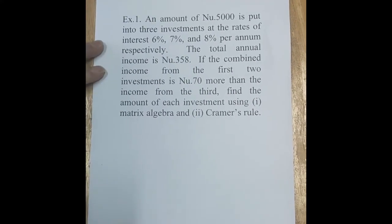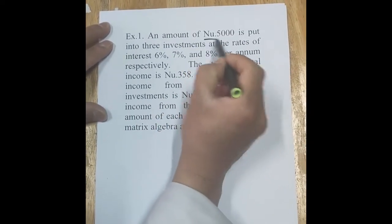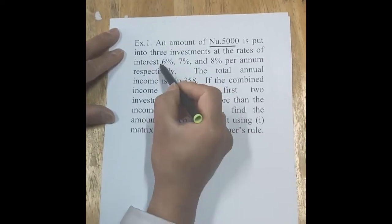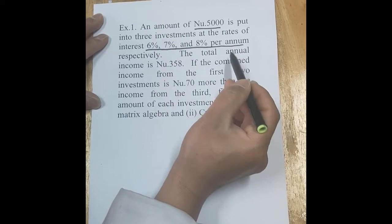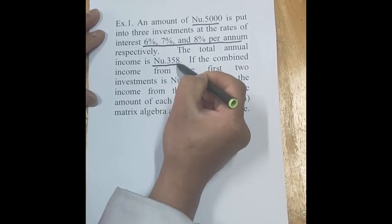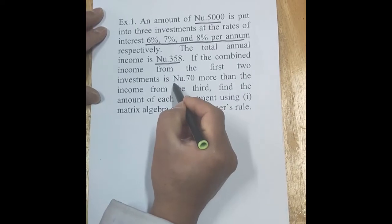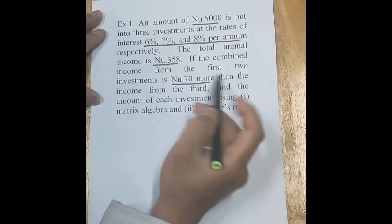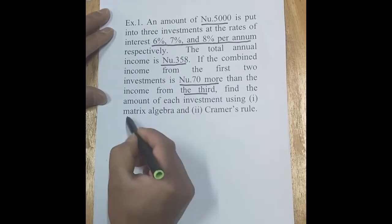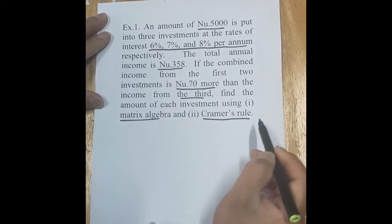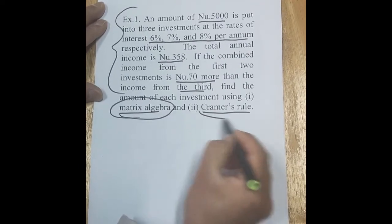Now let us go through example one under the application of system of linear equations. An amount of Ngultrum 5000 is put into three investments at the rate of interest 6%, 7%, and 8% per annum respectively. The total annual income is Ngultrum 358. If the combined income from the first two investments is Ngultrum 70 more than the income from the third, find the amount of each investment using matrix algebra and Cramer's rule.